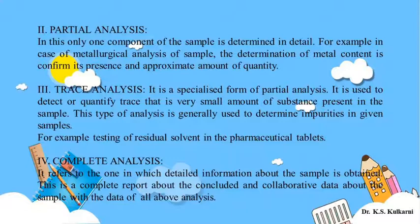The fourth type is complete analysis. As the name suggests, it refers to one in which detailed information about the sample is obtained. This is a complete report comprising concluded and collaborative data about the sample, incorporating data from all the above analyses. When you perform complete analysis, you have to follow all the above methods in your experiment.